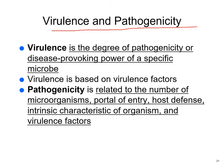Virulence is how pathogenic something is, while pathogenicity is the disease-provoking power of a specific microbe. When we say something is virulent, it means it will cause infection easily. Pathogenicity is related to the number of microbes — if you only get one or two virus particles you may fight them off, but if you get 500 or 500,000 you cannot. The number of microbes matters greatly.